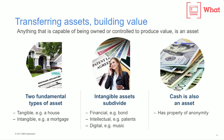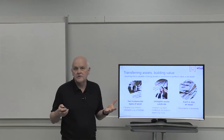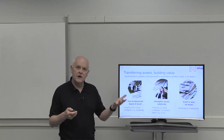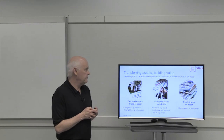And we also observe, on the right-hand side of the screen, that cash is also an asset which has the interesting property of anonymity. I don't know, if I'm given a five-euro note, where that five-euro note came from, and also where it's going to go to after I've owned it.